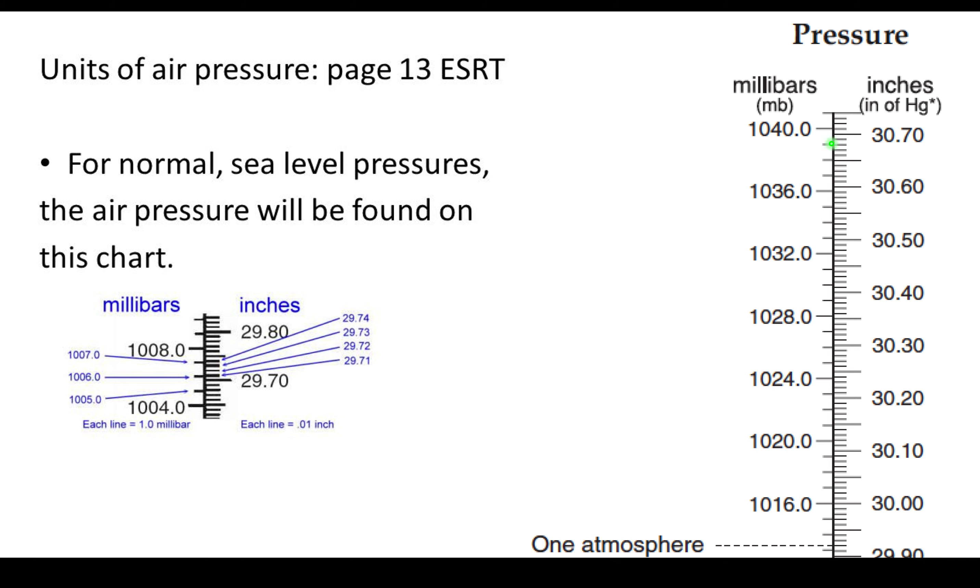So again, we're just going to look over and it's very similar. We're just going to find the correct location of the value and then follow it over to convert to inches of mercury. Or if we have inches of mercury, we'll follow it over to do millibars. Now remember, the scale is a little different. Millibars is easy. Each individual line is worth one. So from 1004 to 1008, each line: 1005, 1006, 1007, 1008.